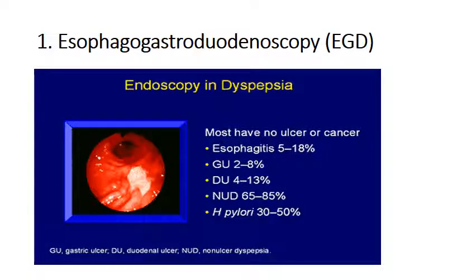Patients with dyspepsia should be scheduled for upper GI endoscopy if they demonstrate alarm features, are older than 55 years of age, or come from regions where stomach cancer is more prevalent such as Japan, China, and Chile. Endoscopic findings in non-ulcer dyspeptic patients are mostly normal. The prevalence of oesophagitis is only 5–18%, gastric ulcer about 2–8%, duodenal ulcer 4–13%, while non-ulcer dyspepsia accounts for 65–85%. That is why endoscopy is reserved for certain populations only.